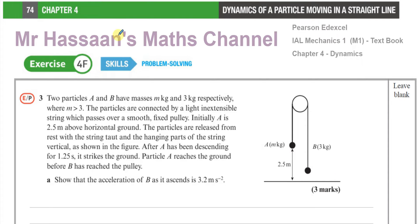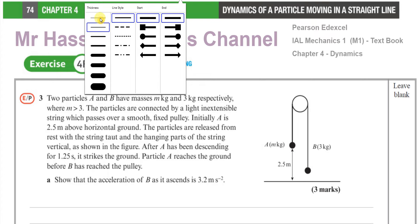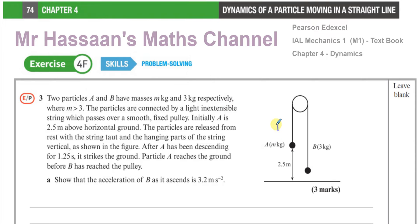The question tells us about two particles A and B. Particle A has mass M kilograms and particle B has mass 3 kilograms, where M is greater than 3. The particles are connected by a light, inextensible string which passes over a smooth, fixed pulley.